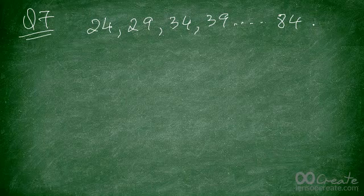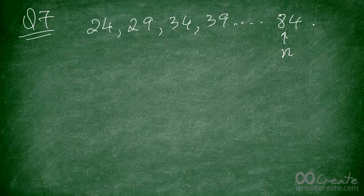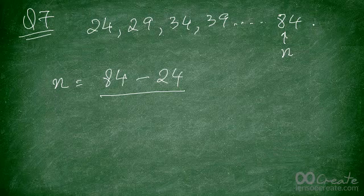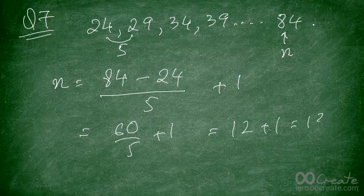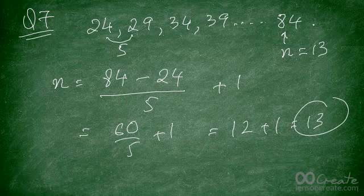Figure out at what position 84 occurs in the sequence starting at 24. The difference is 29 − 24 = 5, so d = 5. Position = (84 − 24) / 5 + 1 = 60 / 5 + 1 = 12 + 1 = 13. So 84 is the 13th number in the series.